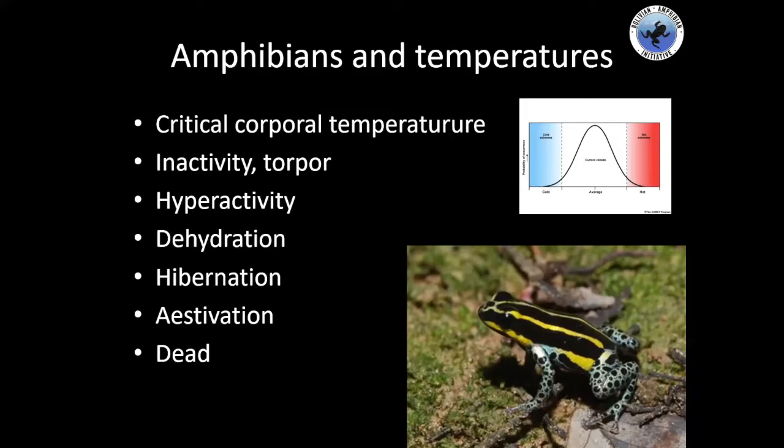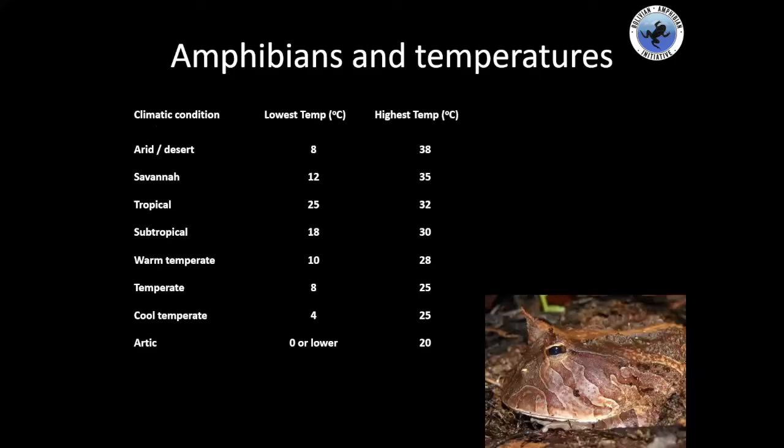You need to be aware of the species you are working with. Depending on the species, you have different temperature ranges — for species that live in deserts, savannas, or Arctic areas. These are the temperature ranges where the different species are used to living, and you should replicate this in captivity.